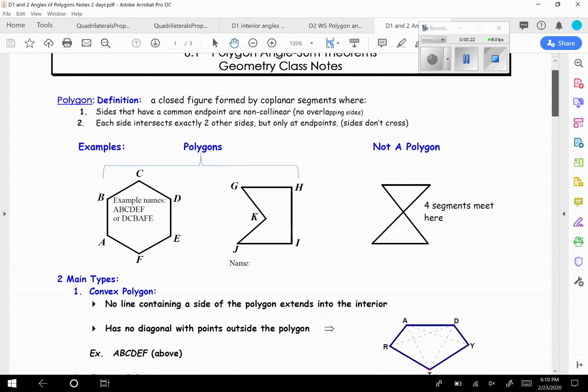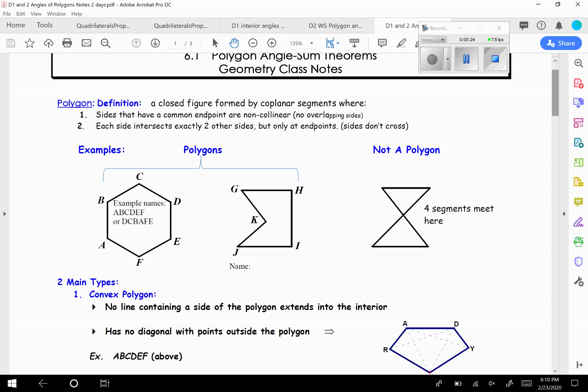This is going to be the beginning of our next unit, and it's over polygons and the sum of their angles. So first thing, a definition of a polygon: it's a closed figure formed by coplanar segments where sides that have a common endpoint are all non-colinear. So basically, there's no overlapping sides.